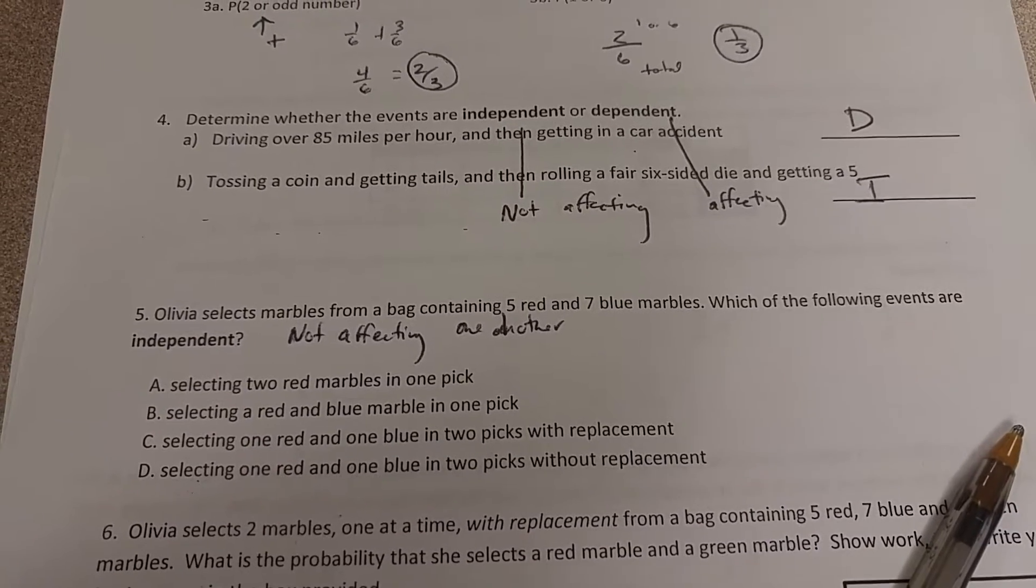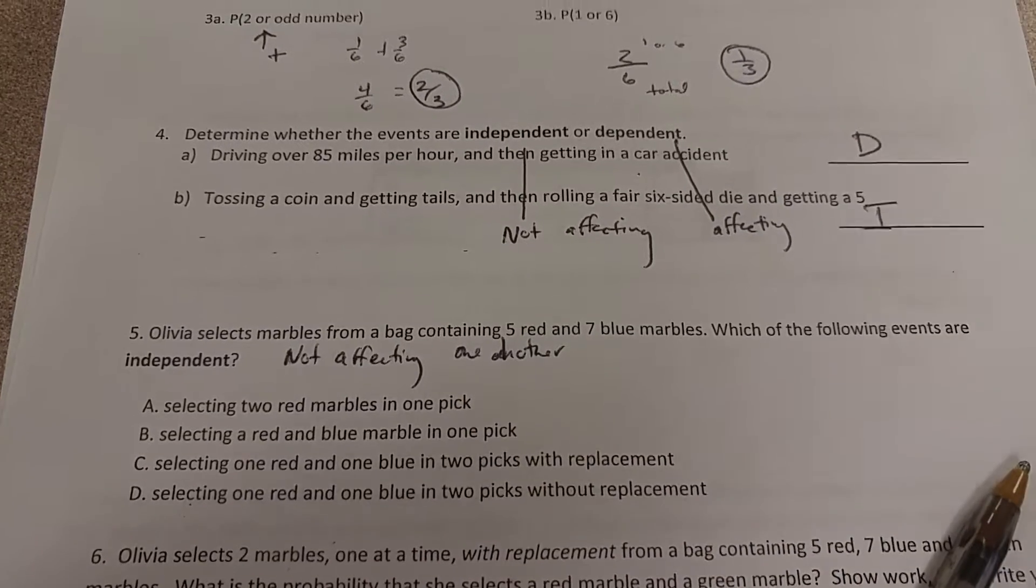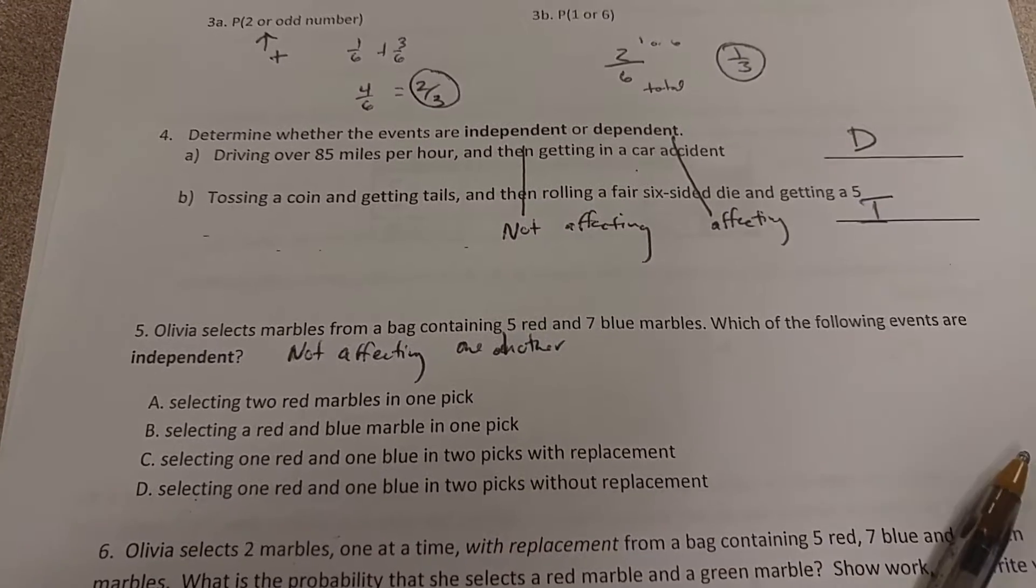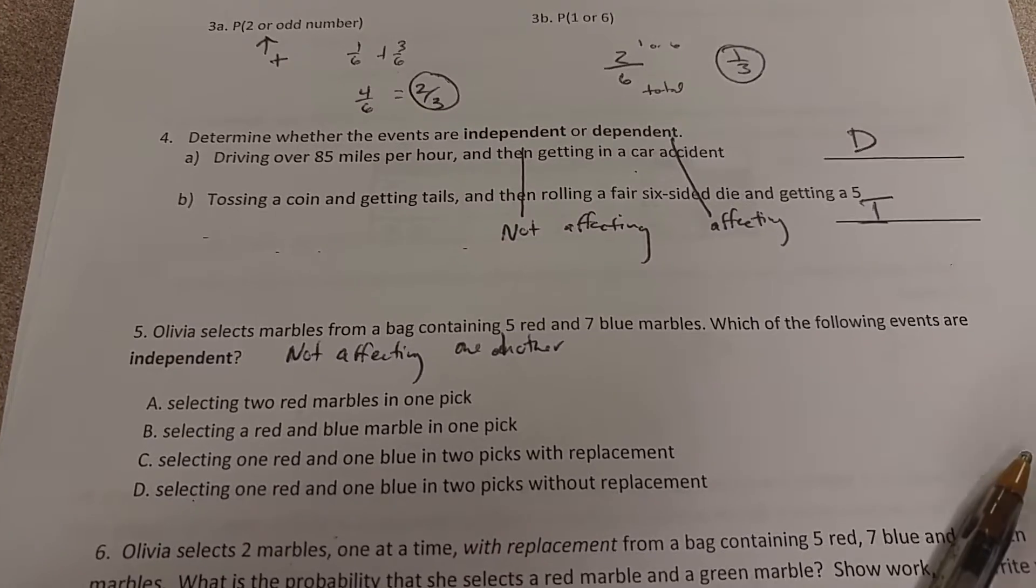So if you had, I think there are five and seven, so there are 12 marbles total. If you pull that first one out, now you only have 11 marbles. When you're pulling the second one out, even though you're doing them in the same pick, it's affecting the other one.